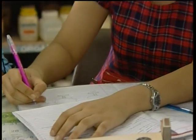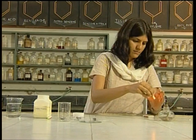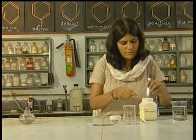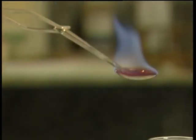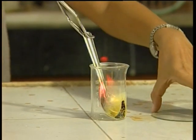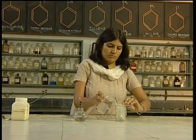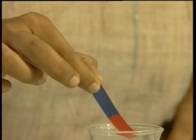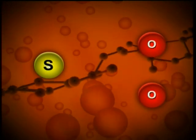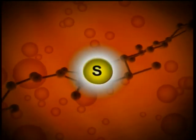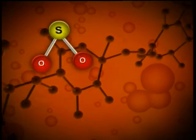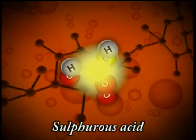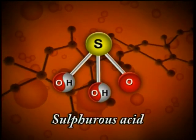Let us take an example and learn what happens during a chemical reaction. When sulfur is burnt in air or oxygen, it forms sulfur dioxide. Sulfur dioxide, when passed through water, forms a solution of sulfurous acid, which is acidic in nature. It is clear from this reaction that a chemical reaction involves breaking of old chemical bonds and making of new chemical bonds. This means a chemical reaction involves only a rearrangement of atoms.